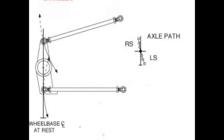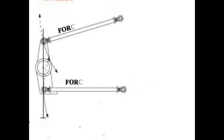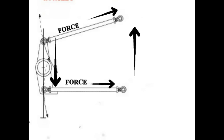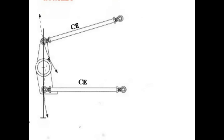Now, we want to talk thrust angle. What is thrust angle? Thrust angle is simply the force of acceleration of the car on the rear end pushing forward against the four-link bars. You can calculate your thrust angle average by adding the top rod angle and the lower rod angle and dividing that by two. That will give your average thrust angle.